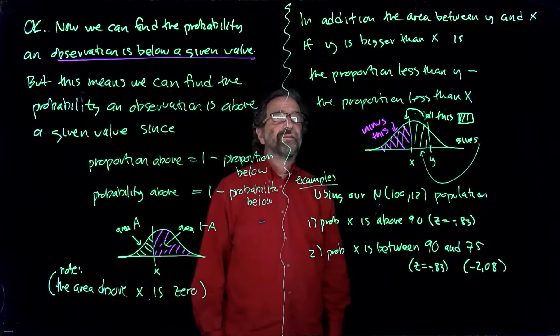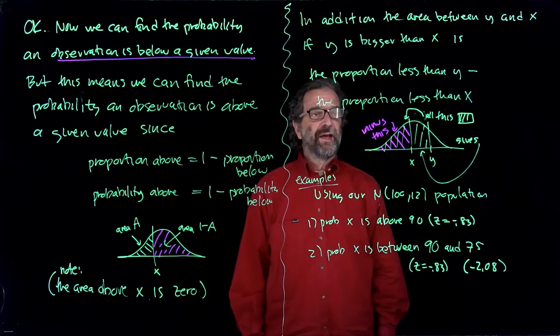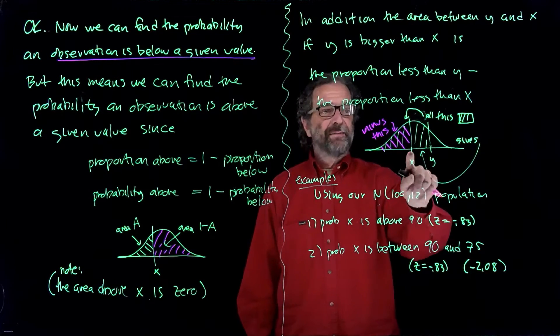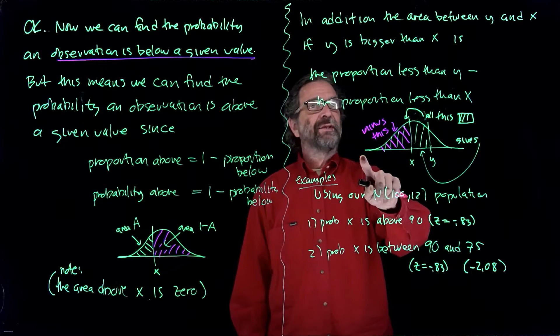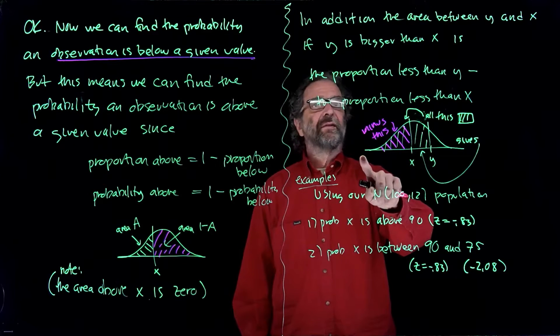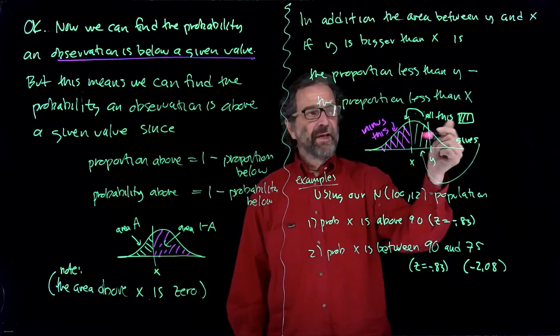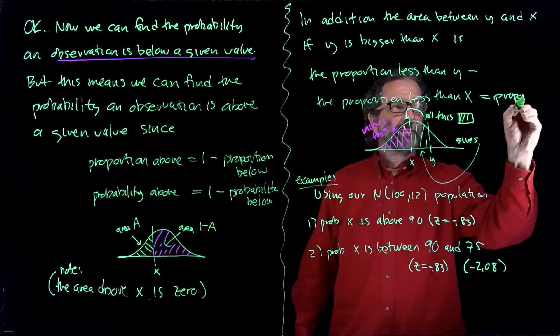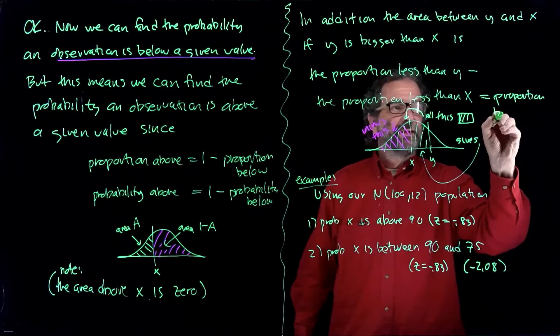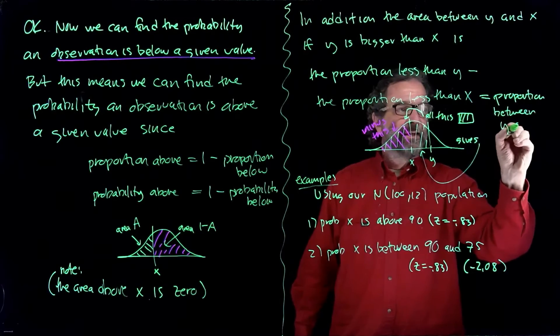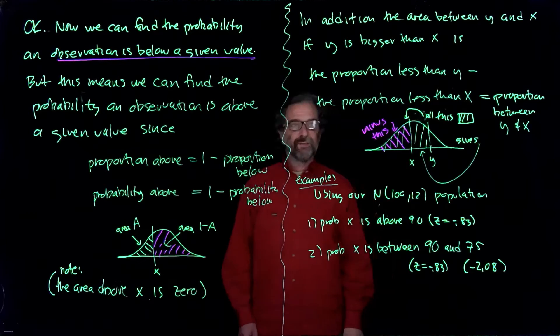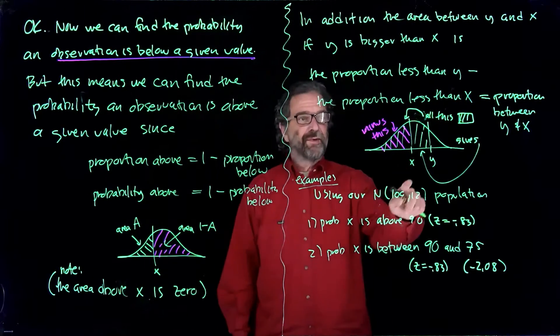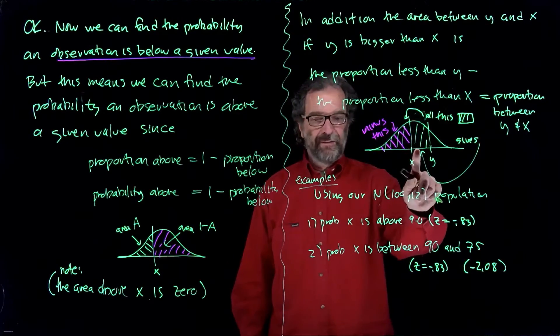And in addition, if you want to find the area between y and x when y is bigger than x, the proportion less than y minus the proportion less than x is the proportion between y and x. So you take the proportion less than y and the proportion less than x, which you look up in the tables. Take the bigger number and subtract the smaller number, and that will give the amount left over in between.